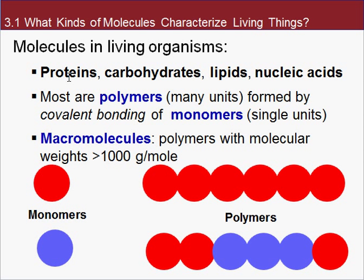Most of these are polymers, which means they're large molecules made up of repeated subunits called monomers. Mono means one — these are the units that are repeated. Proteins, carbohydrates, and nucleic acids are all polymers. What gives us different types of molecules is how we build and link those monomers together.